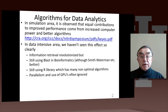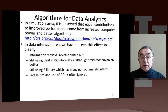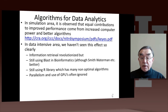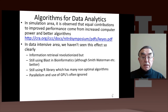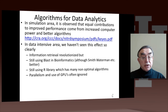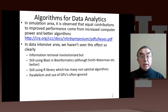But if we go to the data-intensive area, we don't quite see this as much — we have improved algorithms in some cases. Like information retrieval, which has really been revolutionized by new algorithms. But often, like in bioinformatics, we're using BLAST, which is a very important and brilliant algorithm, but it is not being improved much. We're using libraries like R, which do not necessarily have the most optimal algorithms. The issues of using graphics processing units and parallel computing, which are well understood in simulation, are not so clearly understood in the data science area.